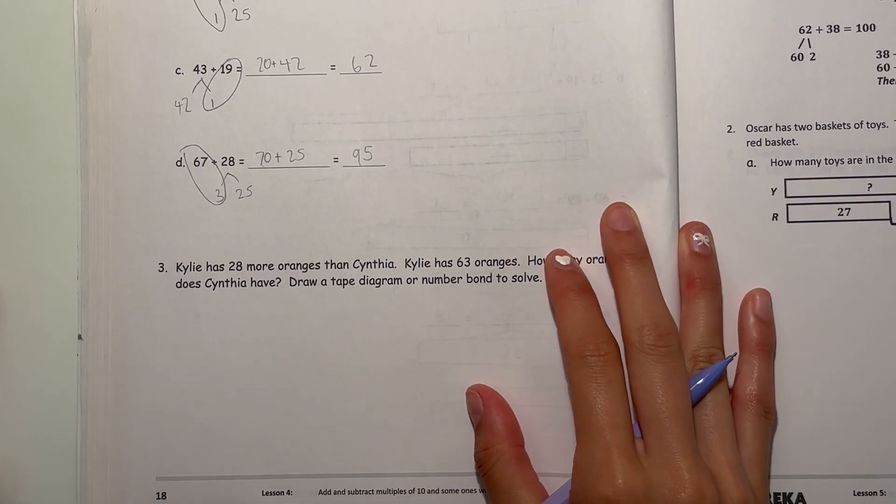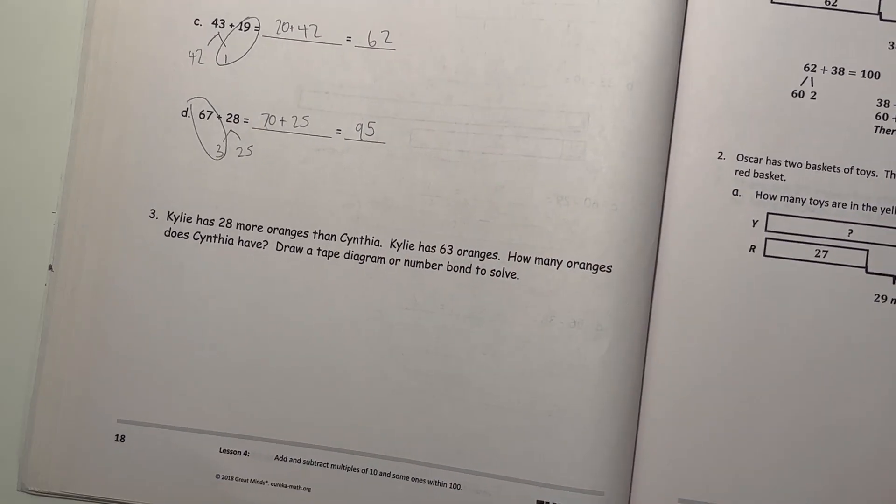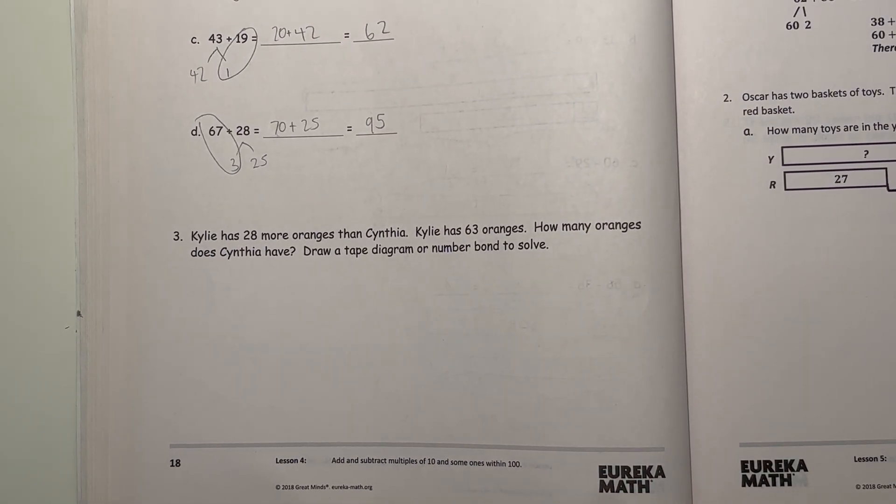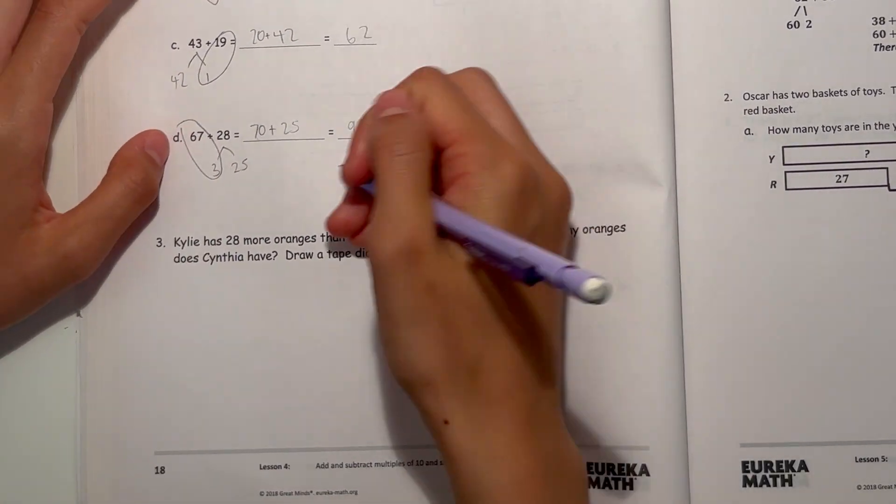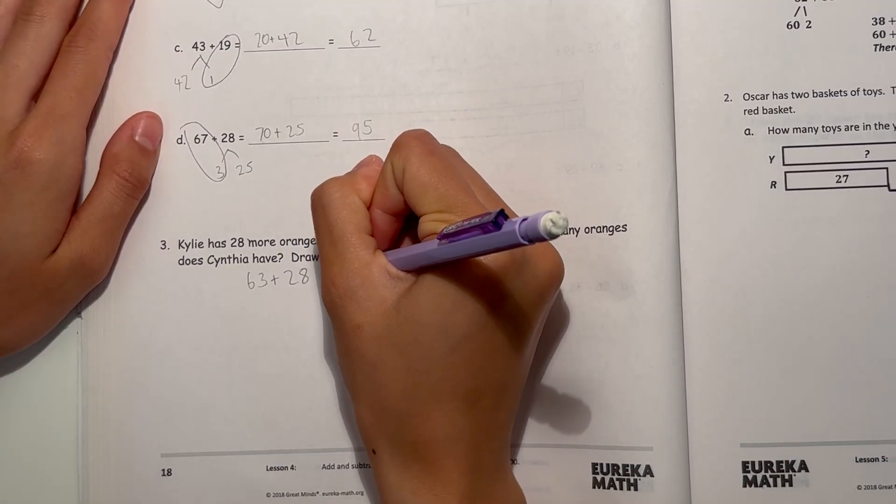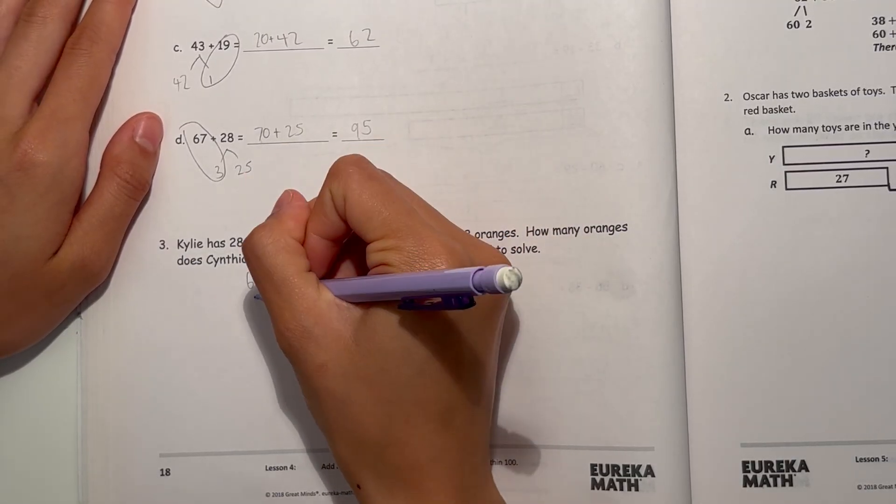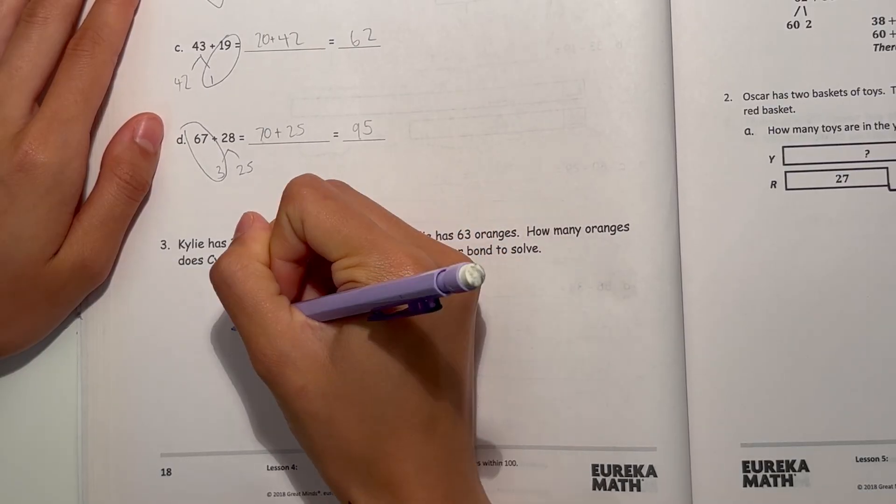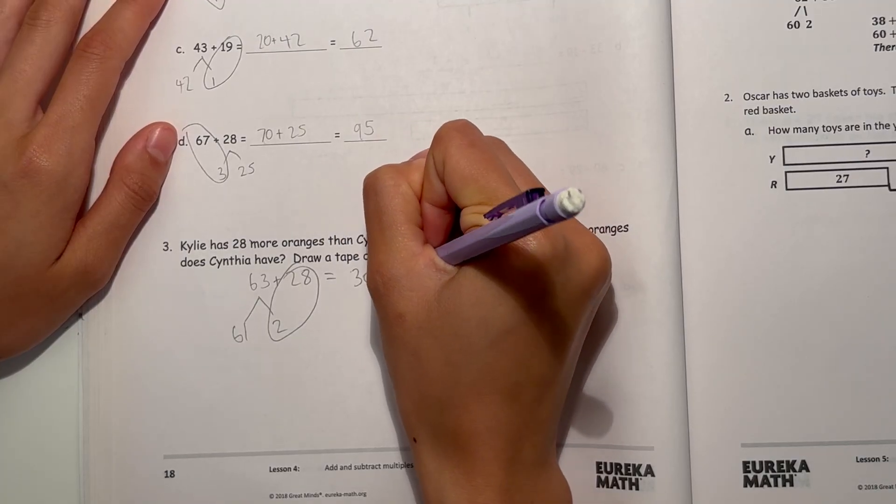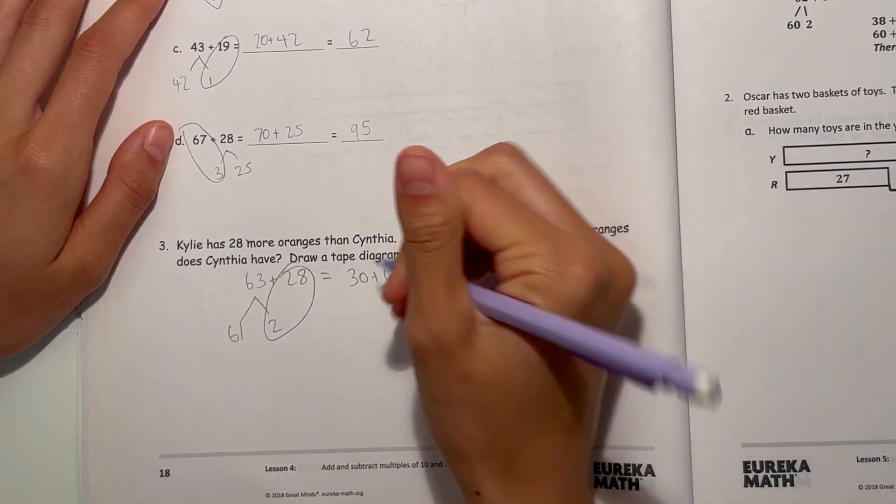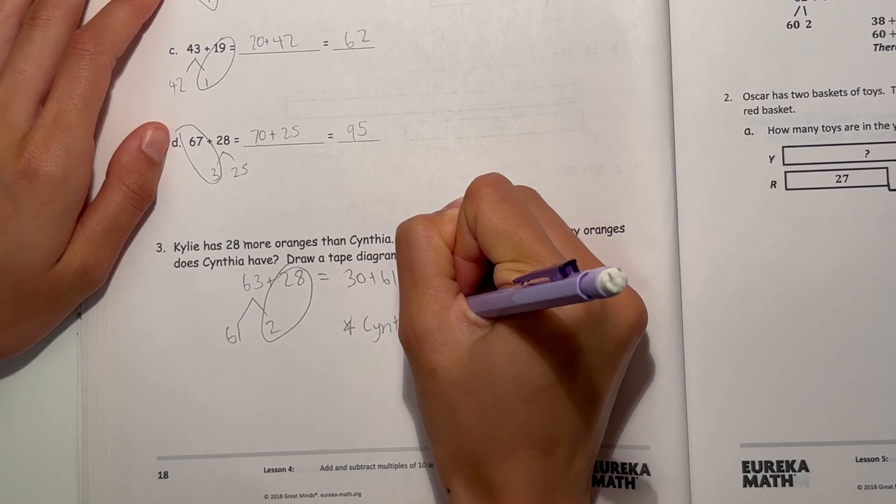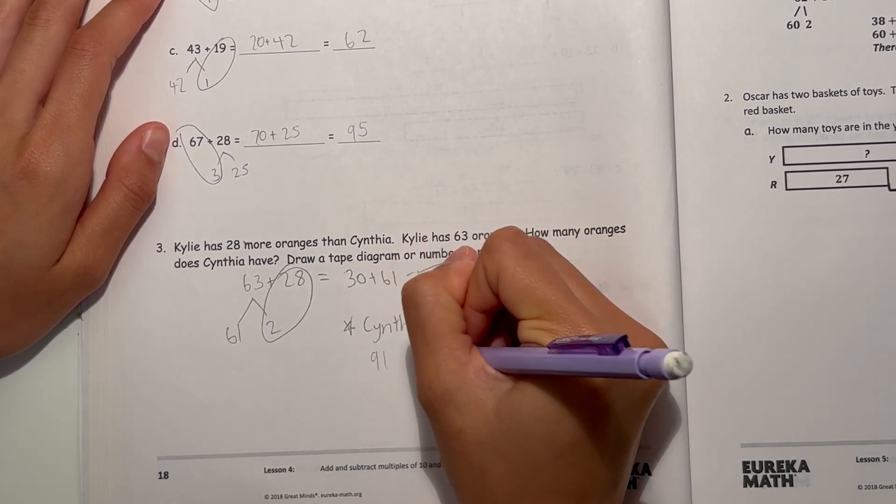Alright, now number 3. Kelly has 28 more oranges than Cynthia. Kelly has 63 oranges. How many oranges does Cynthia have? So 63 plus 28. Alright, I'm going to take out 2 to group this together. This gives me 61 left. So that's 30 plus 61, which is 91. So that means Cynthia has 91 oranges.